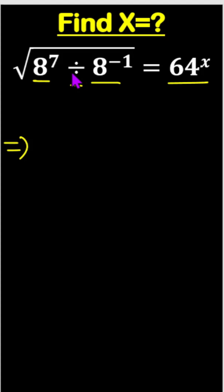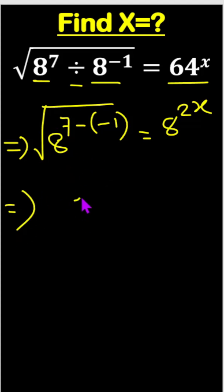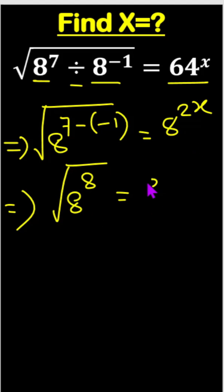Since the bases are the same, in division the powers are subtracted. So we write 8 to the power 7 minus (minus 1), under the square root, equals 64 — which we can write as 8 squared — to the power x. Now, 7 minus negative 1 becomes 7 plus 1 equals 8, so we have 8 to the power 8 under the square root, equals 8 to the power 2x.